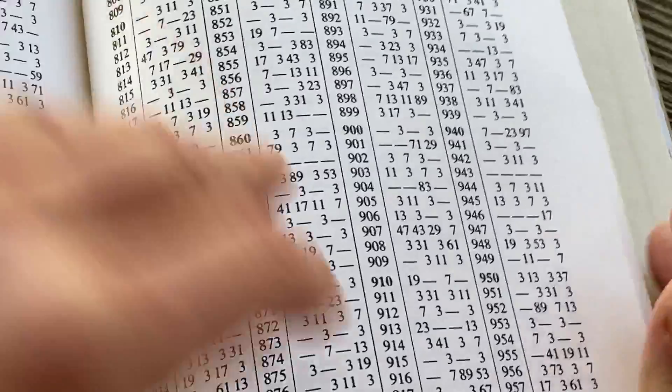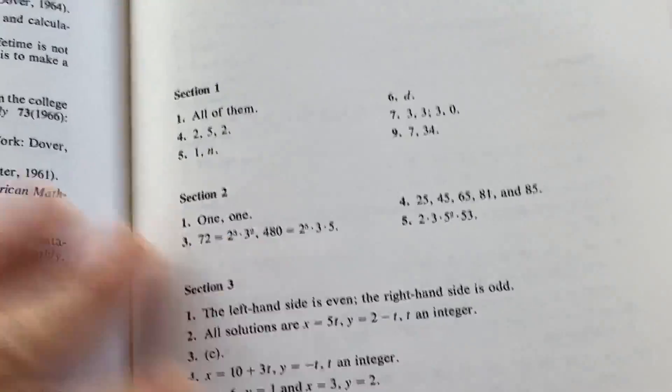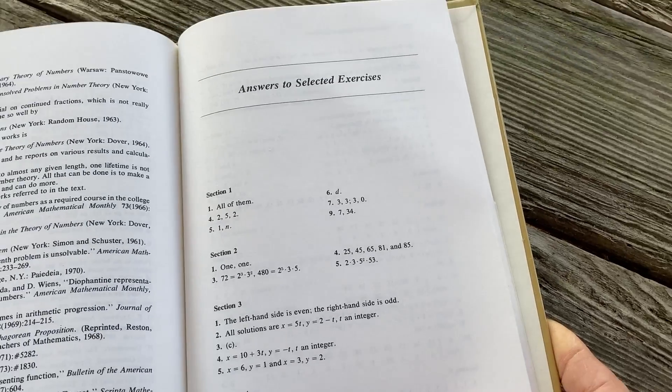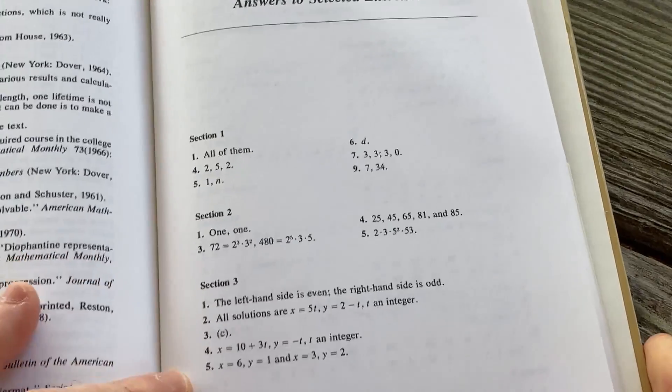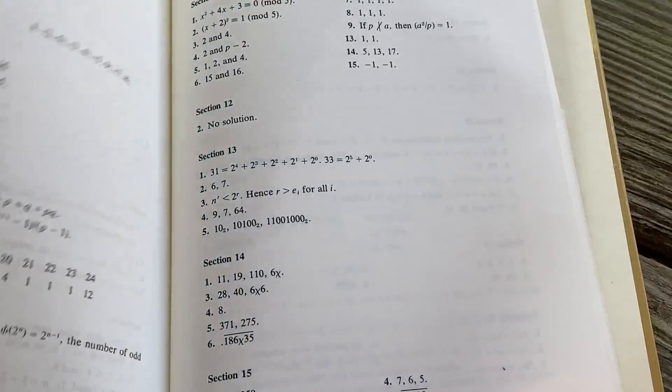Some factor tables here. Some references. And then here we have answers to selected exercises. These are some of the answers in the back of the book here. As you can see, not many. You just get some short answers here.